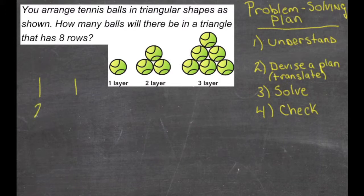With two layers, we have three balls. That's the one from the first one, and then two new ones. So, this one's one plus two.